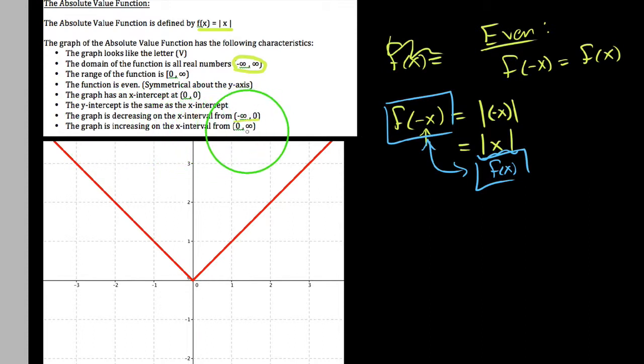But up to an x value of zero, our graph is going downhill, and it is increasing on the x interval from zero out to positive infinity. So from zero out to positive infinity, those x values, our graph is going uphill.